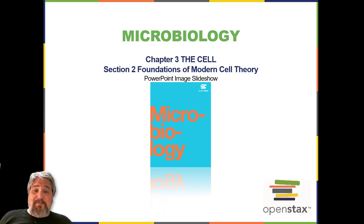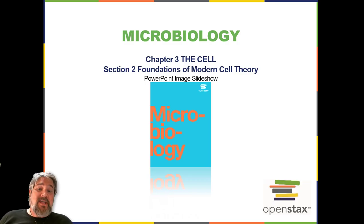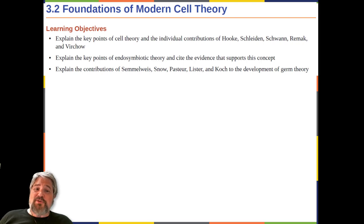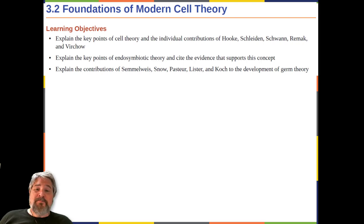Welcome back to Chapter 3, now on Section 2, Foundations of Modern Cell Theory. Learning objectives: explain the key points of cell theory and the individual contributions of Hooke, Schleiden, Schwan, Remack, and Virchow.